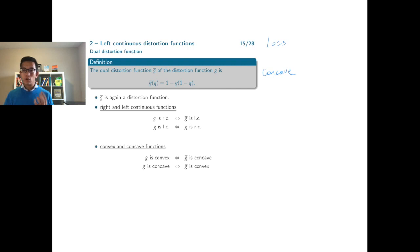With a concave distortion function, applying the function g on the tail probabilities will increase these probabilities. The distorted expectation of a loss random variable is then the expected loss in the stressed scenario.